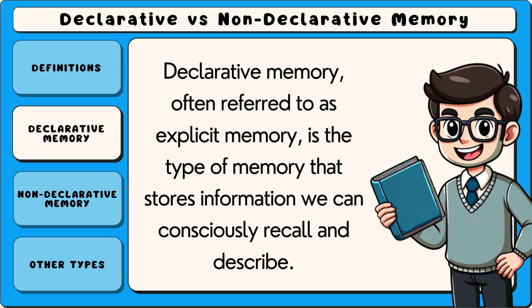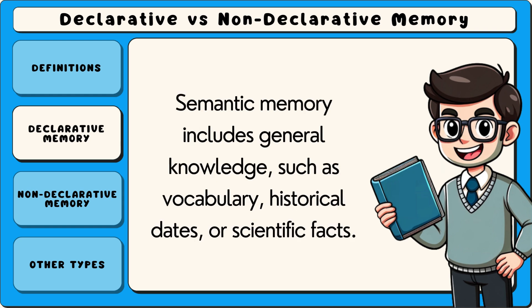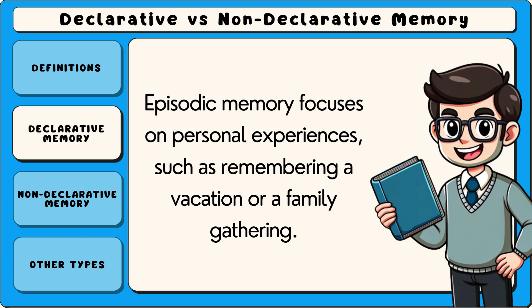Declarative memory, often referred to as explicit memory, is the type of memory that stores information we can consciously recall and describe. It is divided into two subtypes: semantic memory and episodic memory. Semantic memory includes general knowledge, such as vocabulary, historical dates or scientific facts. Episodic memory focuses on personal experiences, such as remembering a vacation or a family gathering.